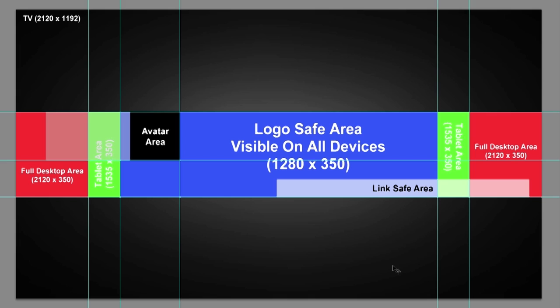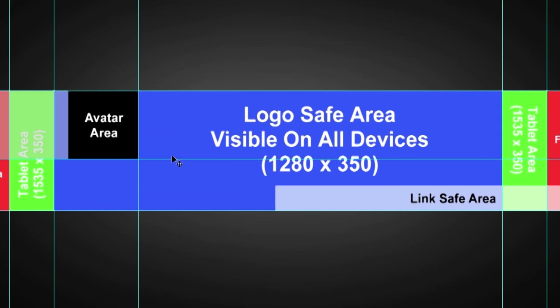Here we are in the One Channel template and as you can see, it's fairly self-explanatory. I'll go through some areas for you now. This blue area here is where you're going to be visible on all devices — mobile, tablet and also your desktop.